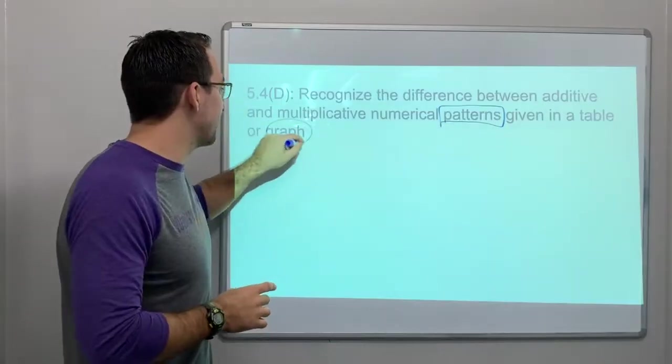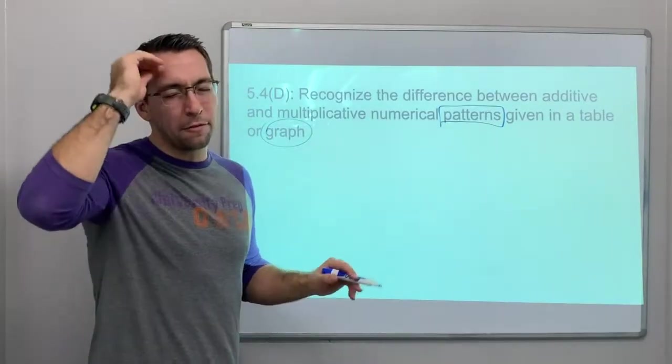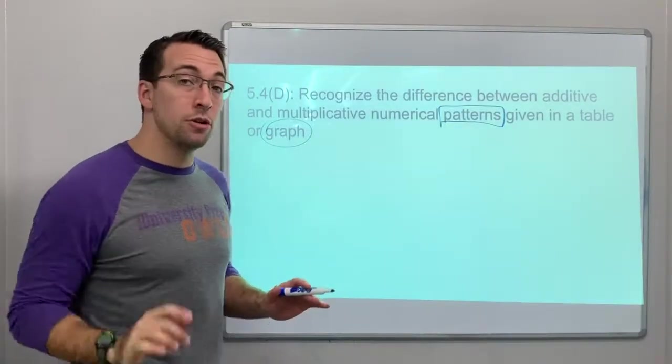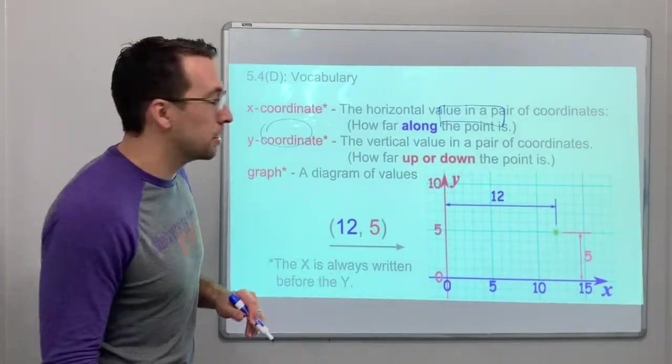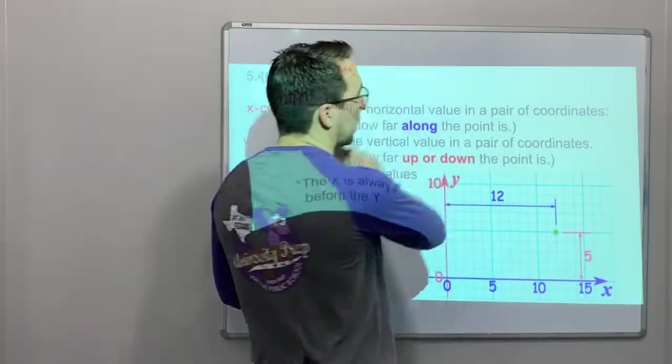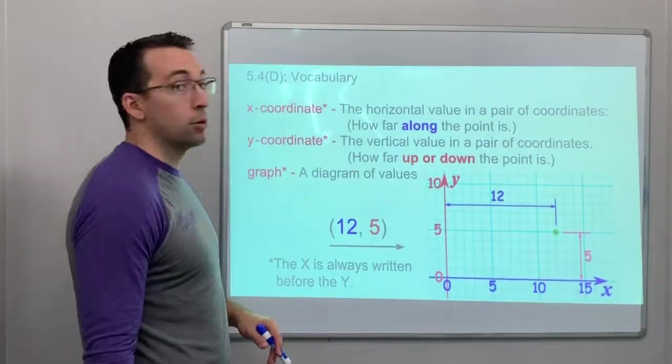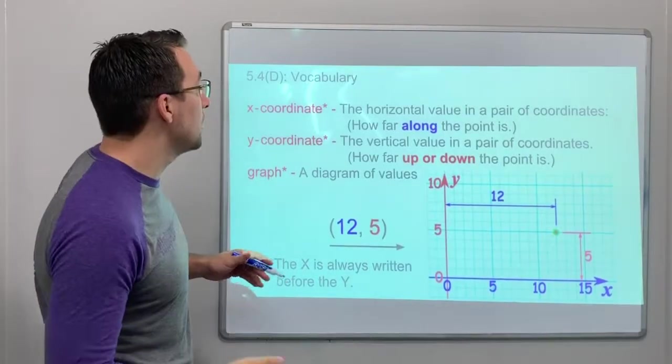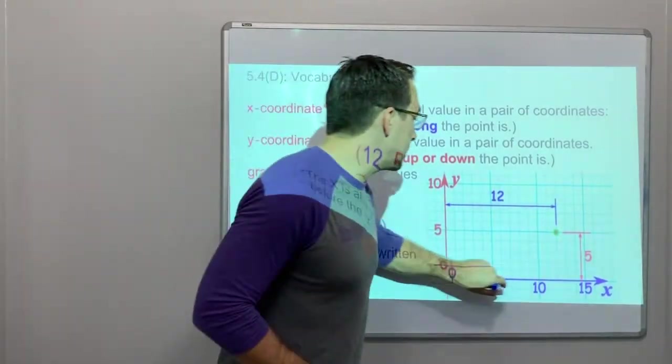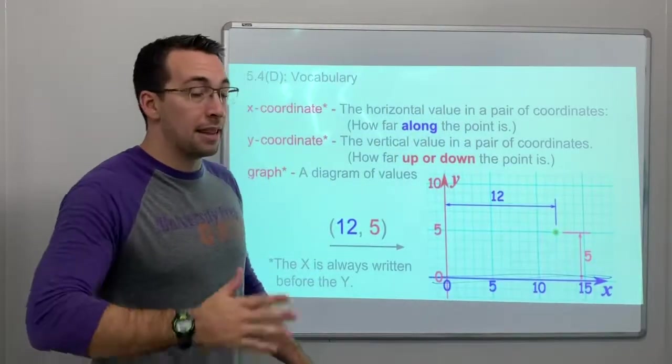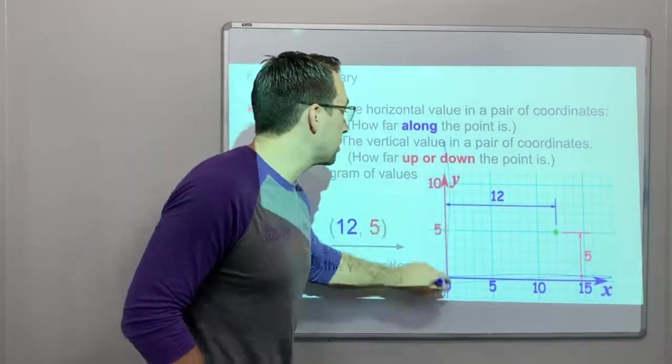And look, graph. Okay, so you're going to have to be able to graph a line using these tables and these coordinates. So again, we've looked at this in the last video in 5.4C. The x value is the value across the bottom, and the y value is the value across the vertical line.